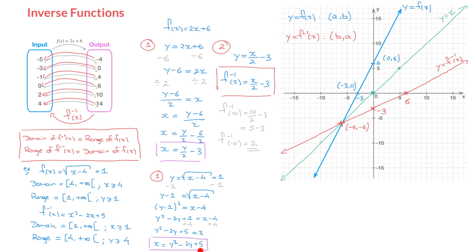Moving on to step 2, I use the expression just found and swap the x and y's to define this function's inverse function. Swapping x and y gives y = x² − 2x + 5. So this function's inverse function is f⁻¹(x) = x² − 2x + 5. We now have this function's inverse function whose domain and range are shown here.